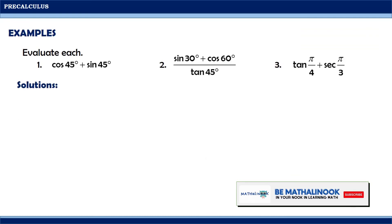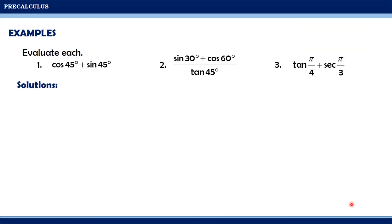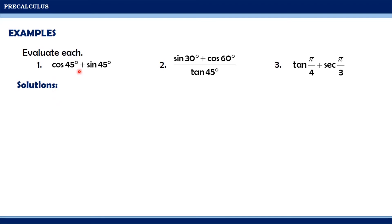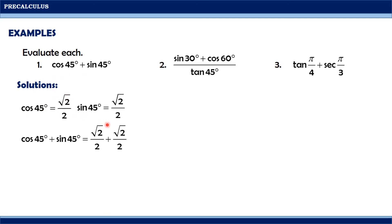Now let us use these values to evaluate some expressions. For the first one, we have cosine 45° plus sine 45°. Cosine 45° equals √2/2 and sine 45° equals √2/2. By substitution, we get √2/2 plus √2/2, which simplifies to 2√2/2, and canceling 2 over 2 gives us a final value of √2.